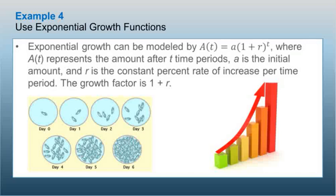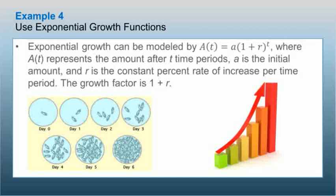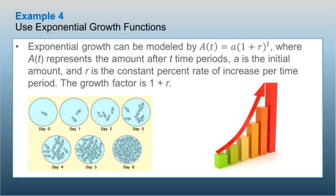Now we'll use exponential growth functions. Exponential growth can be modeled by A(t) = a(1 + r)^t, where A(t) represents the amount after t time periods, a is the initial amount, r is the constant percent rate of increase per time period, and the growth factor is (1 + r). This formula is very similar to finding compound interest.